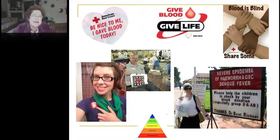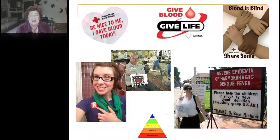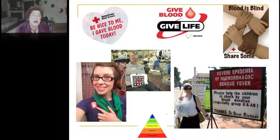Giving blood is a hard sell. How do you get people to give blood? You could pay them — like at the plasma center. But most of the time blood banks don't have resources to do that. It kind of hurts, it's inconvenient, you might feel bad for the rest of the day, and you never really see a direct benefit. How can I, as a motivated communicator whose job is to recruit blood donors, apply Maslow's hierarchy of needs?